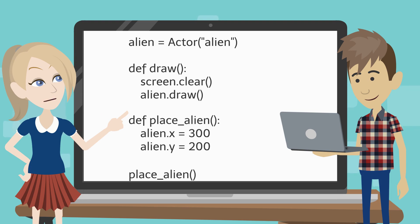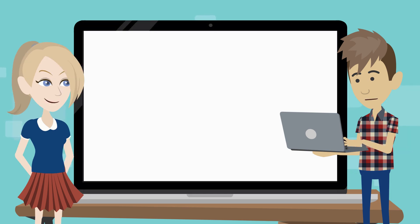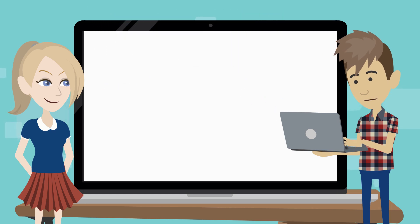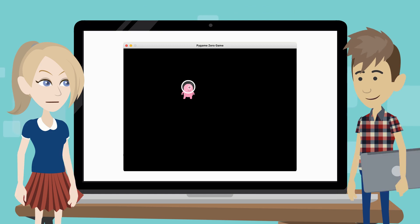Let's test it again. We must save our program before playing it, or we'll run an old version of our code. Save the file and play it. The alien is placed at coordinates 300 and 200. What do the two numbers mean?